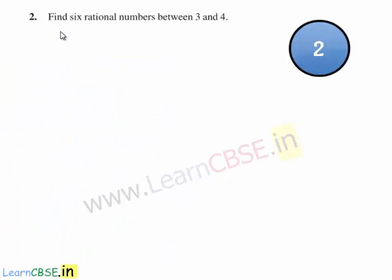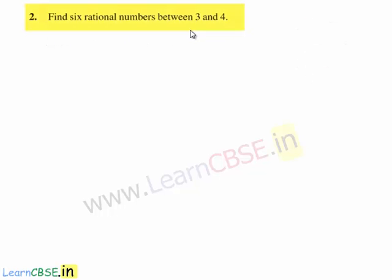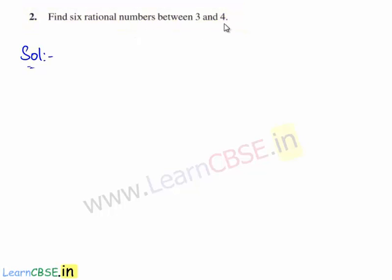Now let us move on to the second question in the exercise. The second question is: find six rational numbers between 3 and 4. So let's go to the solution. Here we need to find six rational numbers between 3 and 4.